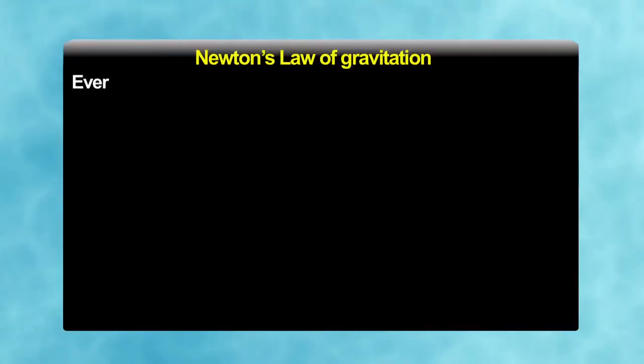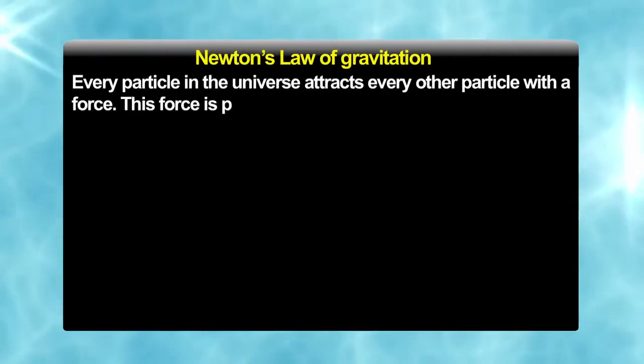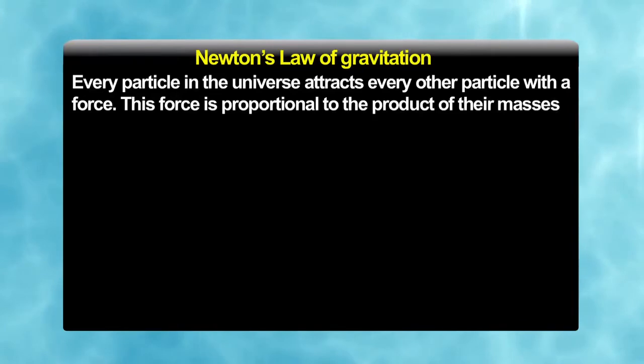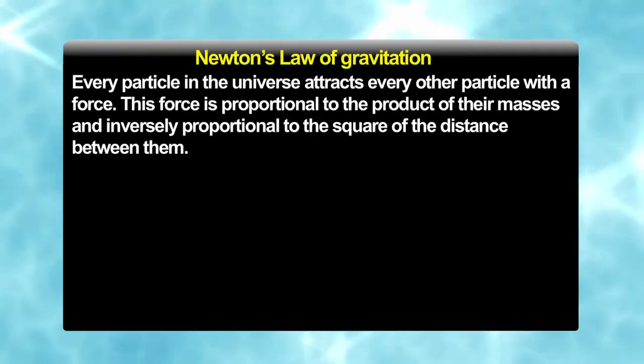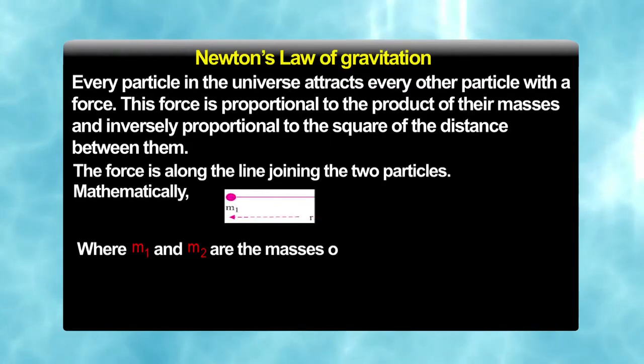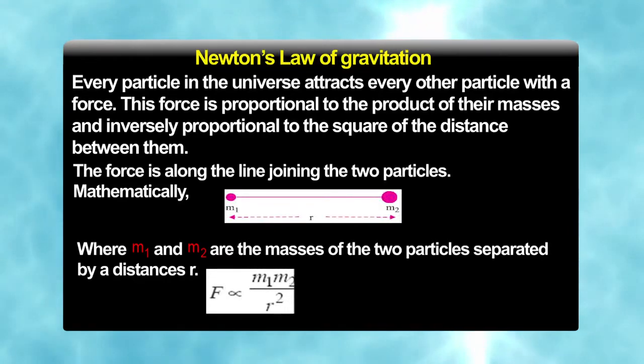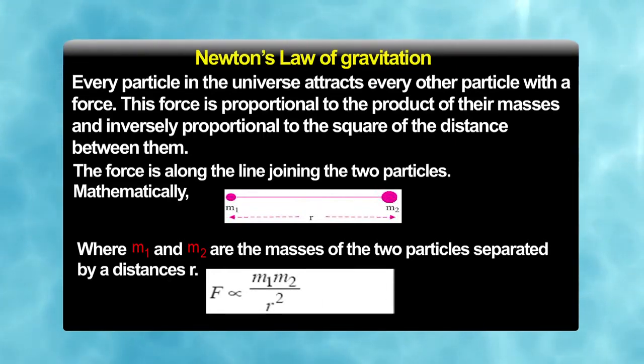That is every particle in the universe attracts every other particle with a force. This force is proportional to the product of their masses and inversely proportional to the square of the distance between them. Also, the force is along the line joining the two particles. Mathematically, where m₁ and m₂ are the masses of the two particles separated by a distance r, F is proportional to m₁m₂ divided by r square. But if we remove the proportionality sign, F is equal to G m₁m₂ divided by r square.